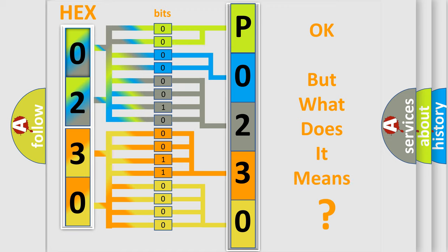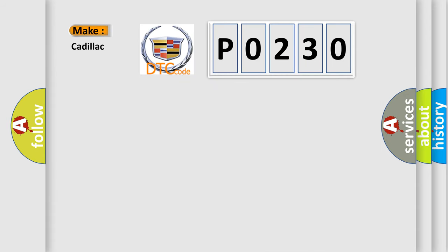The number itself does not make sense to us if we cannot assign information about what it actually expresses. So, what does the diagnostic trouble code P0230 interpret specifically for Cadillac car manufacturers?